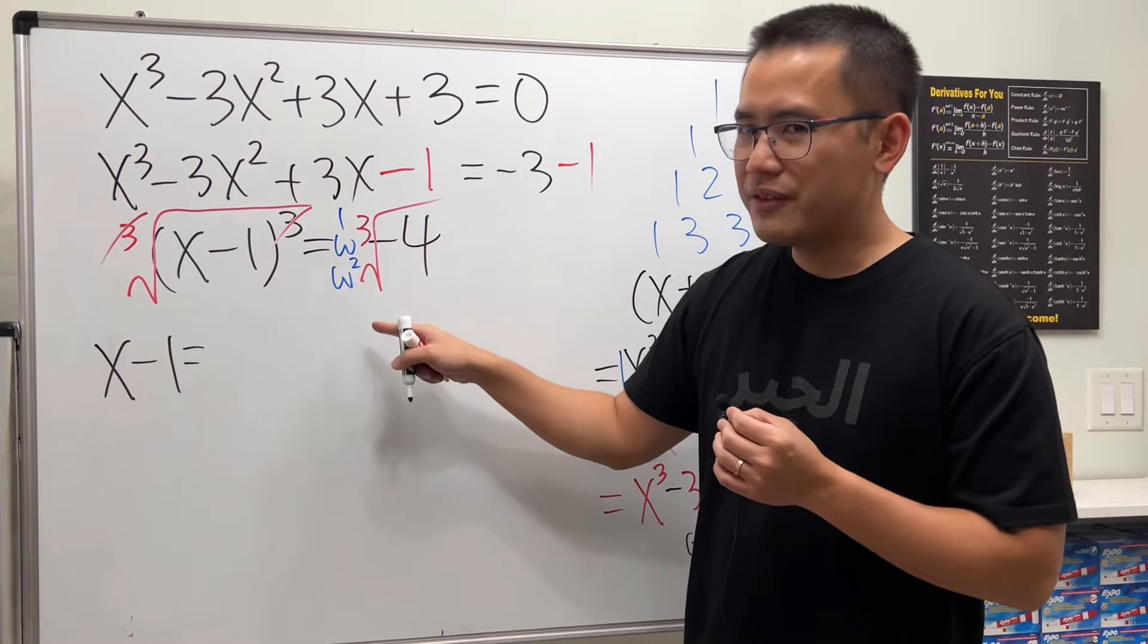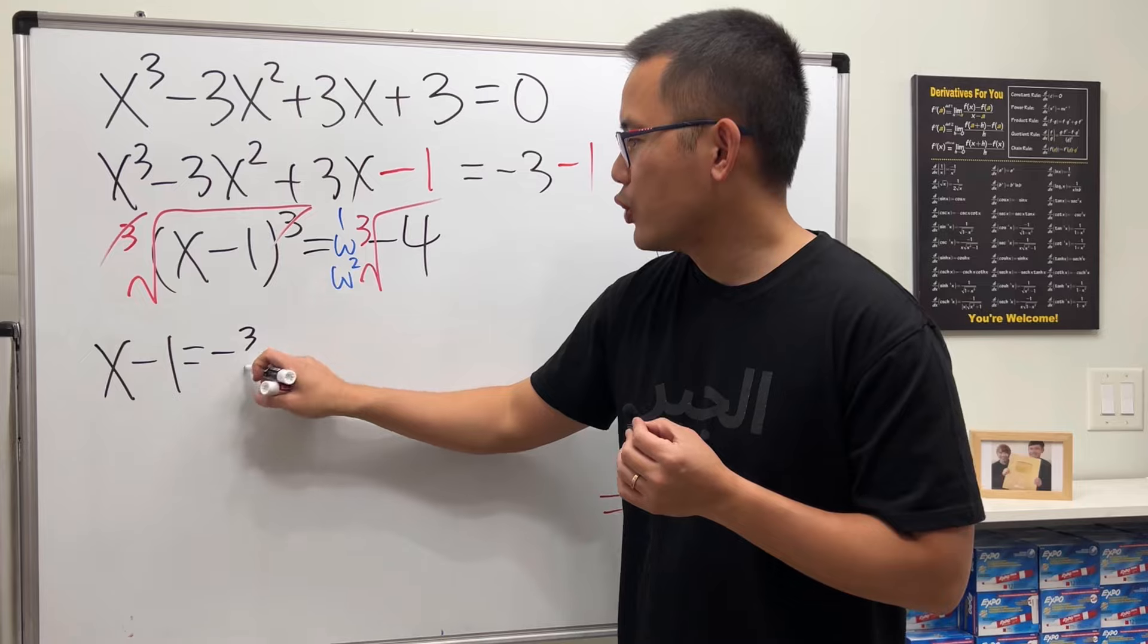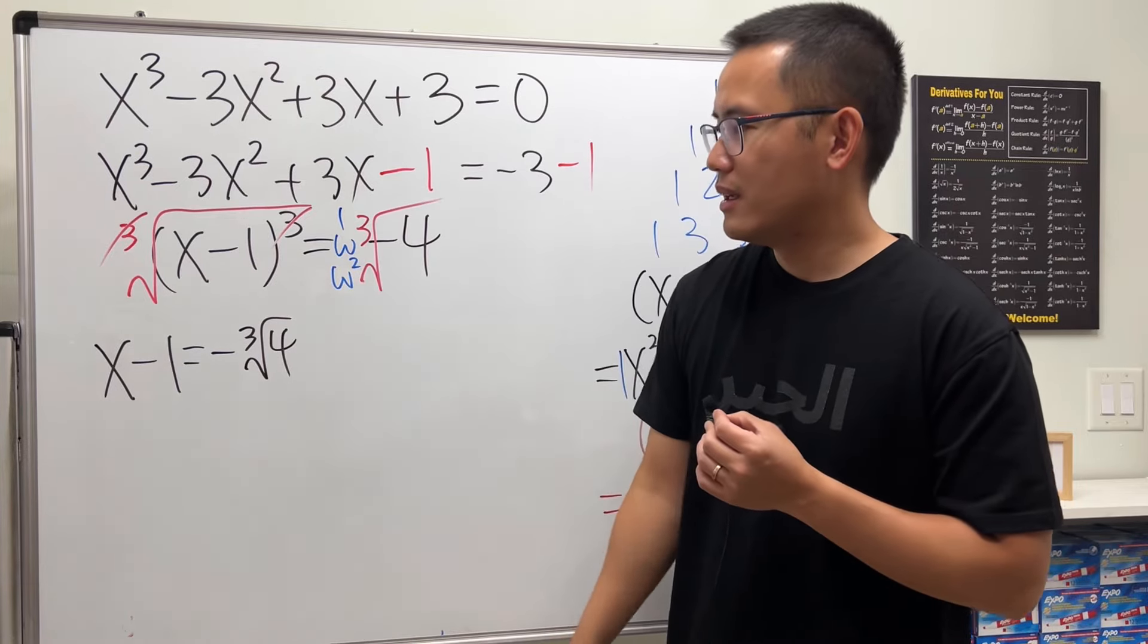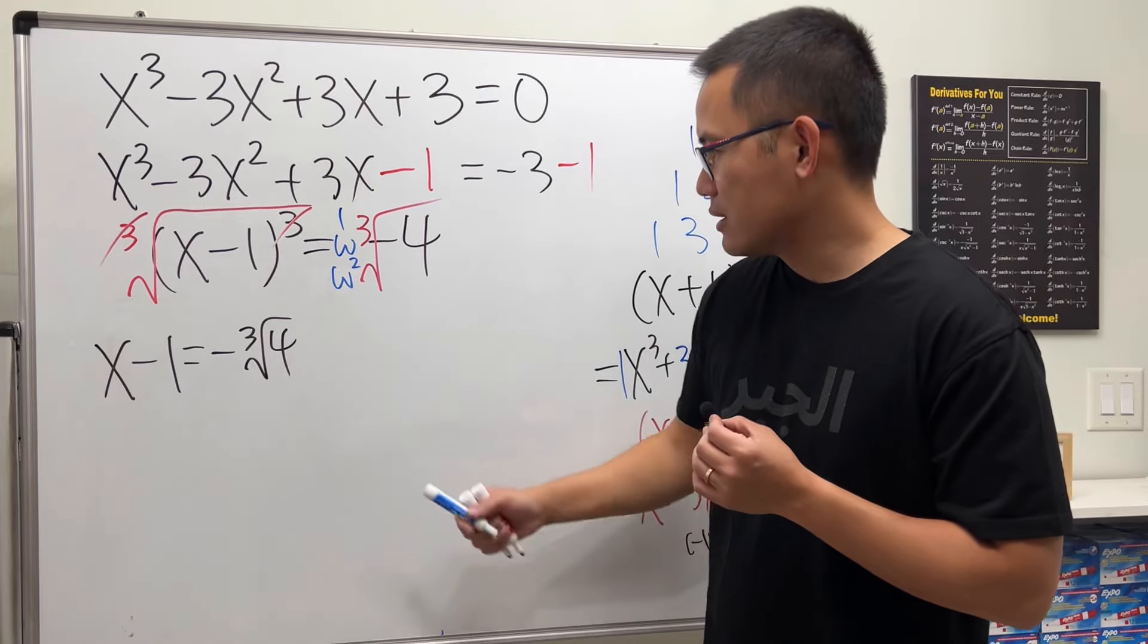This tells us x - 1 equals negative, instead of the cube root in the real world you can put that in the front, so it's negative ∛4.